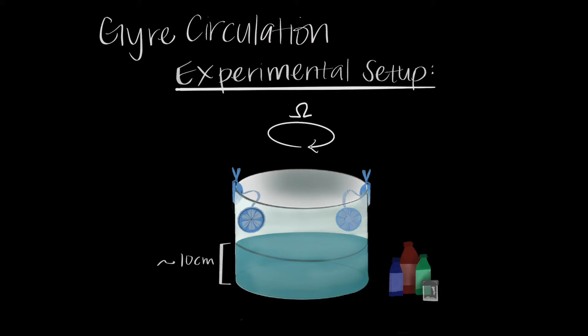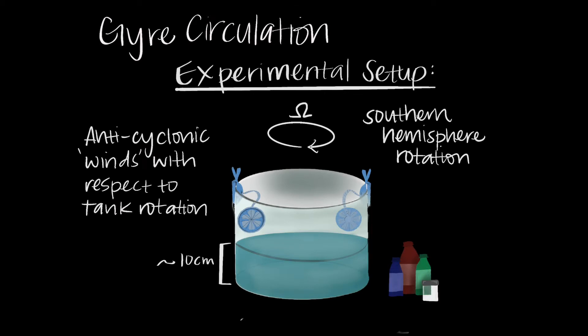Making a note that the tank will be spinning clockwise, this is the same thing as southern hemisphere rotation. We set up the fans to blow winds in an anticyclonic direction, or the opposite of the direction in which the tank is rotating. This creates an anticyclonic gyre which is akin to what we see in the subtropics.